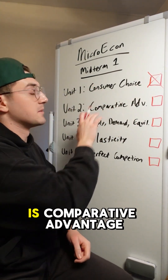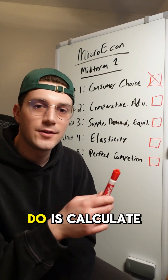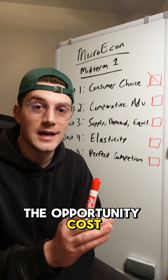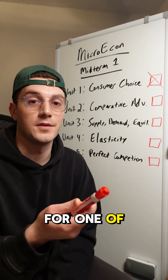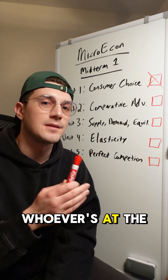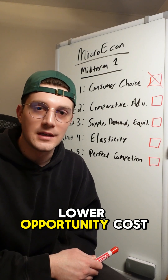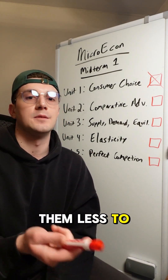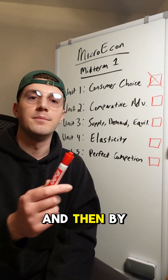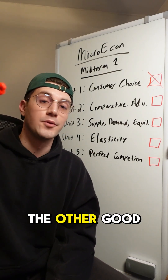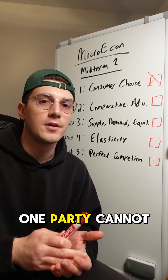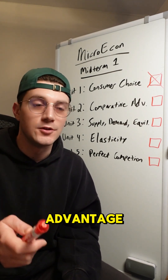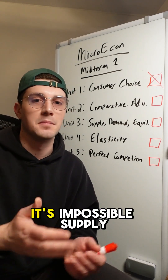Next up is comparative advantage. What you need to do is calculate the opportunity cost for both parties for one of the goods. Whoever has the lower opportunity cost is the one who should specialize in it because it costs them less to produce it. By default, the other good will go to the other party. One party cannot have the comparative advantage in both goods — it's impossible.